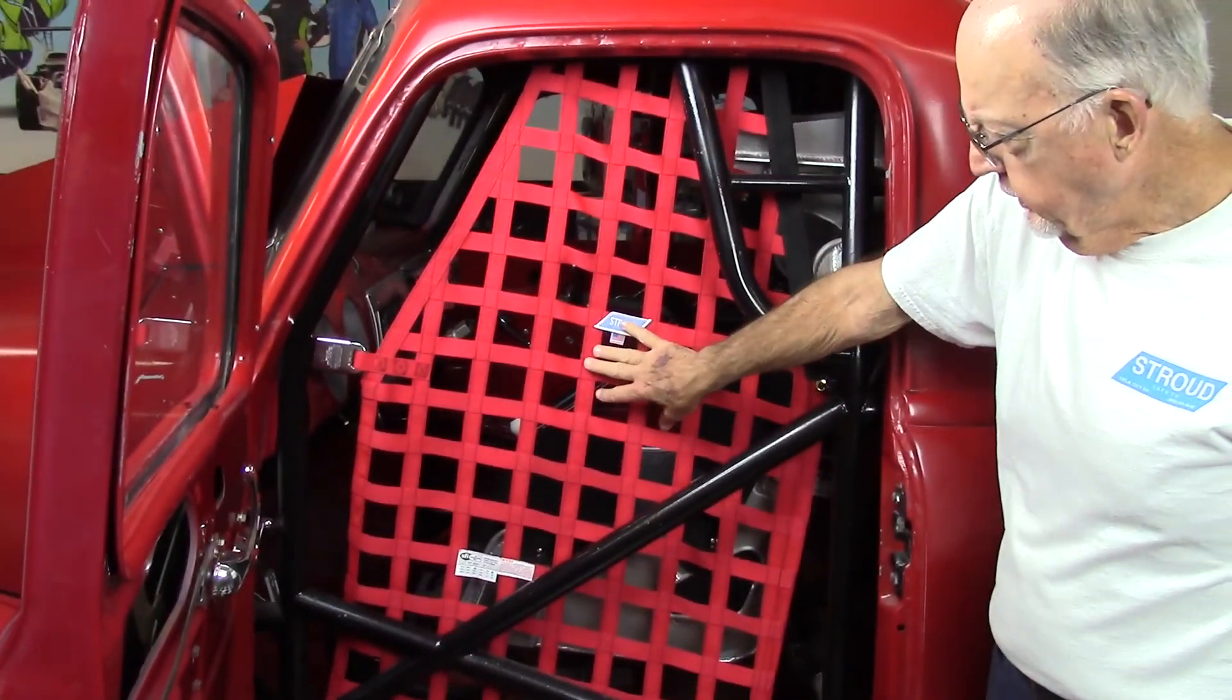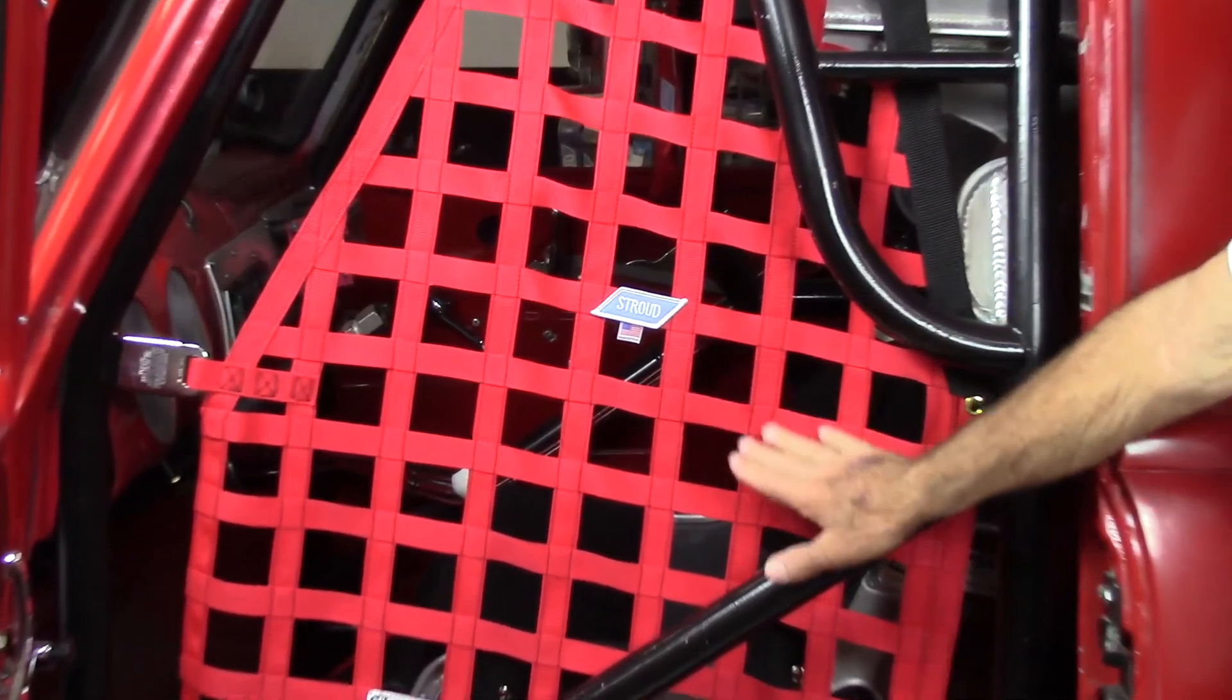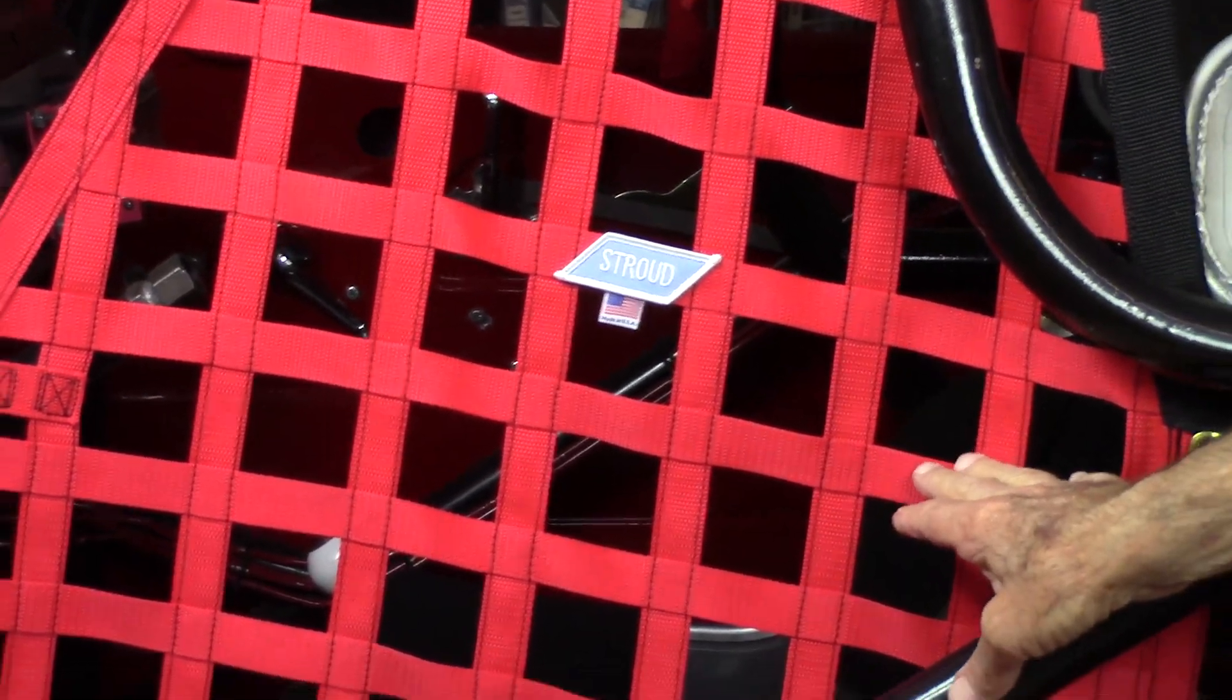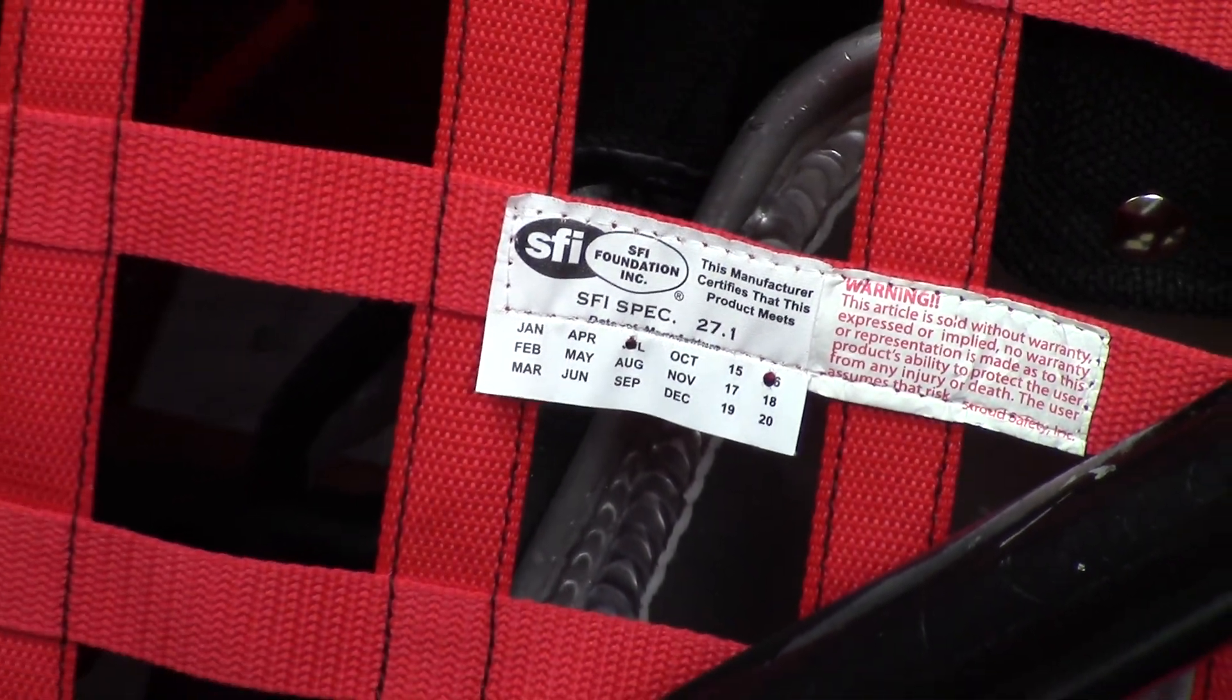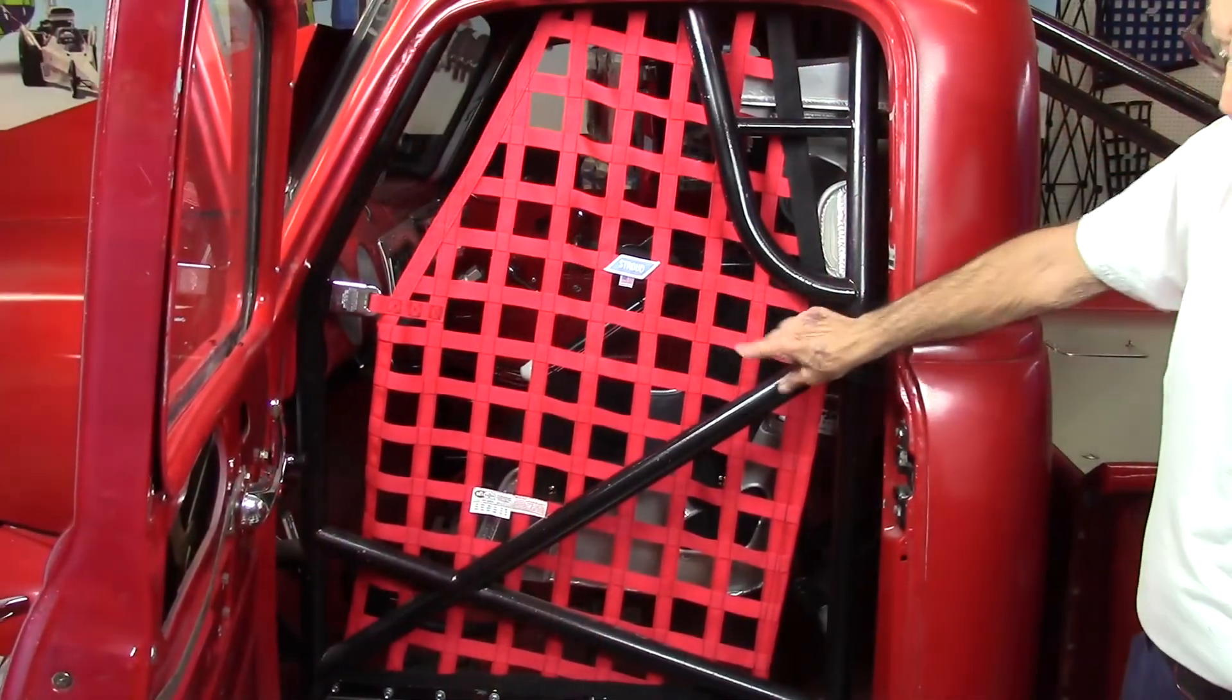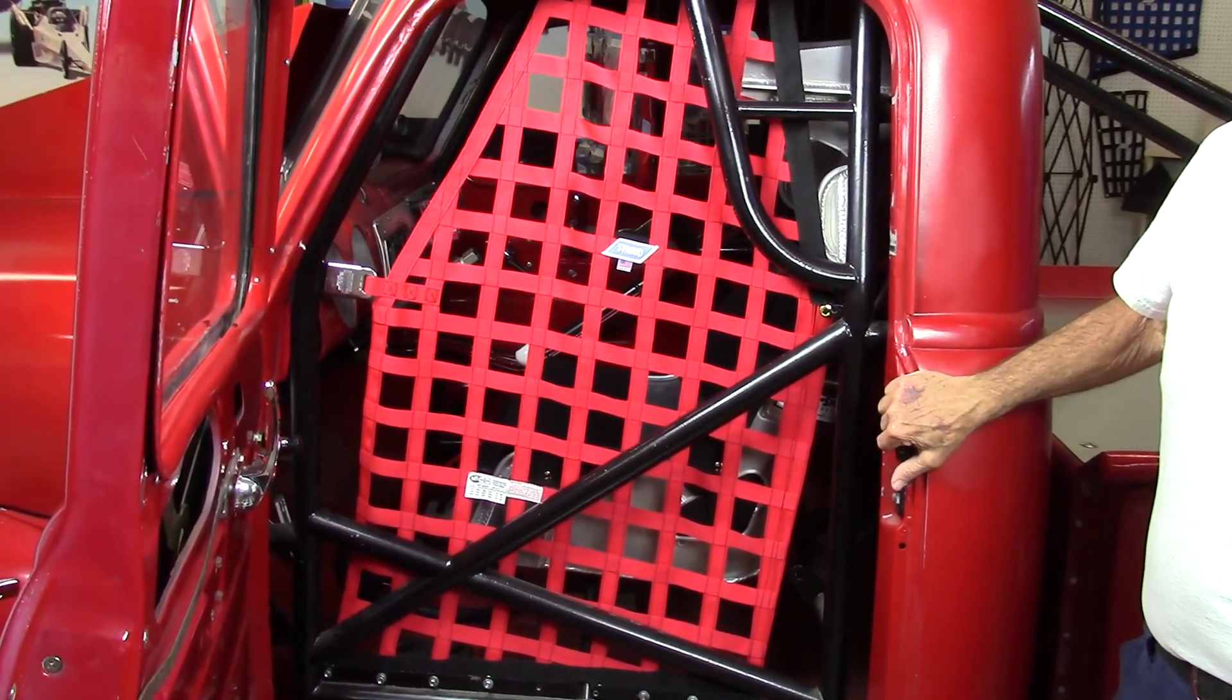If you have an existing door net, send that in and we'll match it. Also indicate your color or colors and the orientation of the horizontal ribbons of the webbing. Door nets are SFI compliant and must be certified. Requirements are the same as window nets. Stroud recertifies their door nets and will reuse your mounting hardware if it is in good shape.